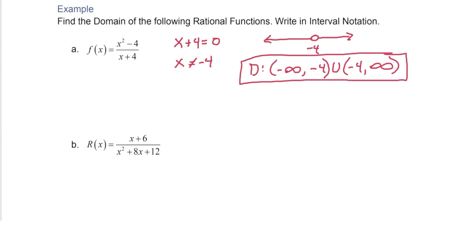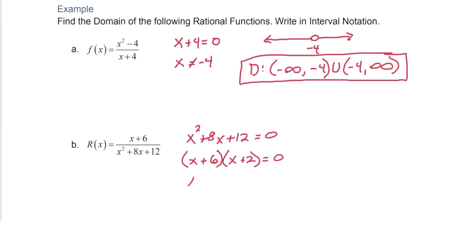In the next example, we again set the denominator equal to zero to find the restrictions. This is a quadratic that we can factor as x plus 6 and x plus 2. Setting each factor equal to zero and solving independently gives x equals negative 6 and x equals negative 2, both of which are restrictions.